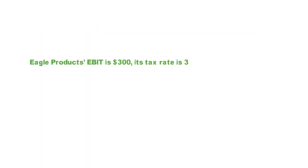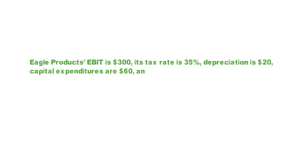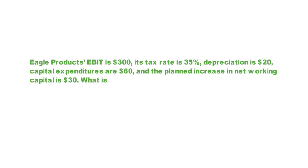Let's take an example. Eagle Products' EBIT is $300, its tax rate is 35%, depreciation is $20, capital expenditures are $60, and the planned increase in net working capital is $30. What is the free cash flow to the firm?